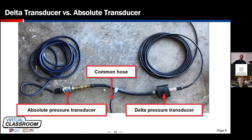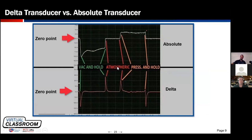I've taken two vacuum hoses joined with a T — on the left is my absolute pressure transducer, on the right is my delta pressure transducer — and coupled both outputs to a lab scope. On the other end of the hose, I'll introduce pressure changes. This screen capture is from an ATS E-Scope Elite in dual scope mode, which plots two scope screens synchronized on the same time base. The top screen is my absolute pressure transducer, zeroed out at atmospheric pressure — zero psi gauge.